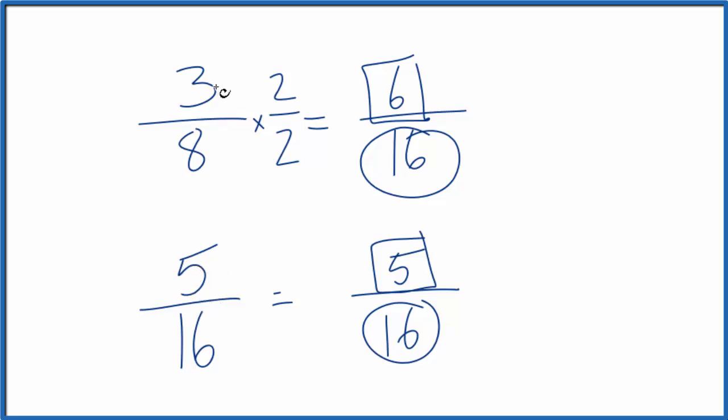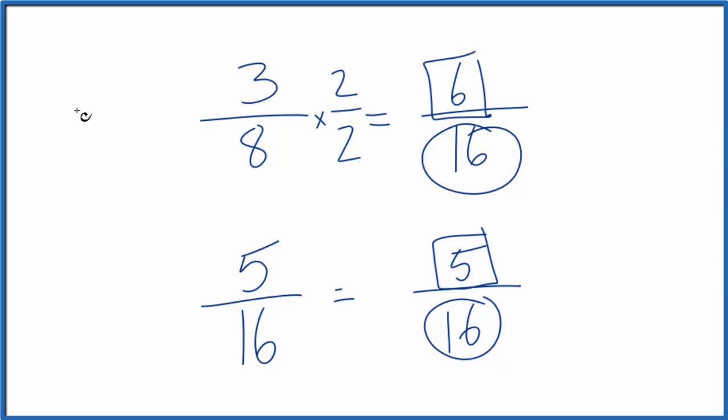If we use the calculator to divide 3 by 8, we get 0.375, and 5 by 16, we get 0.3125. I'm going to round it to 313, and you can see again,